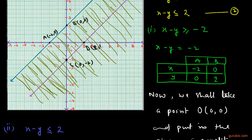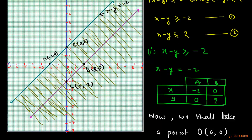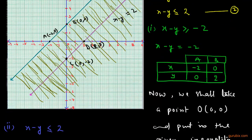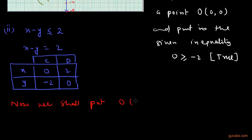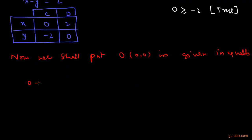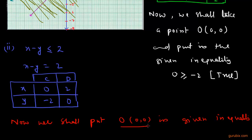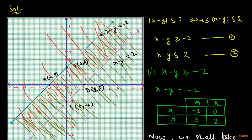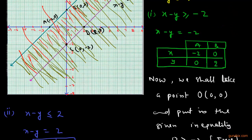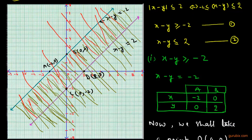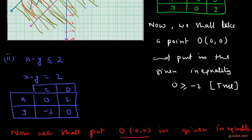We draw a line through points C and D — this is the line x minus y equals 2. Substituting the origin (0, 0) into the given inequality: 0 minus 0 less than 2, which means 0 less than 2, and this is true. Therefore the region where this point lies represents the solution set of inequation number 2. The common region of both inequalities is the common solution of the given inequation. Thank you.